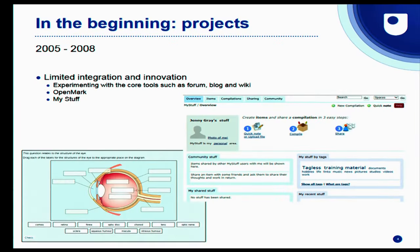Back then, using Moodle in itself was seen as innovative, and we were experimenting with core tools such as Forum, Blog, and Wiki. We did integrate a few tools of our own. We had an existing in-house Java-based question engine called OpenMark, which we still have today and still use for our most complex question types. Of course, our definition of complex has changed over the years — where we've seen question types come up again and again in OpenMark, we've turned those into question types in the Moodle quiz, so that anyone can use them without needing a Java programmer.